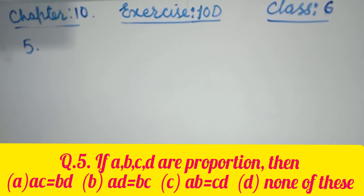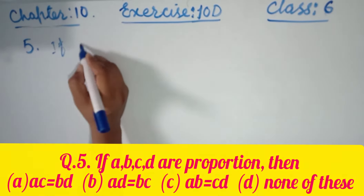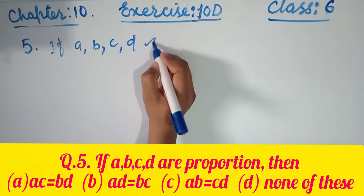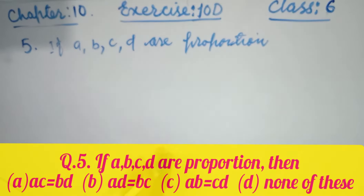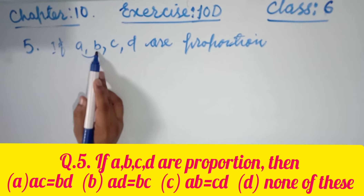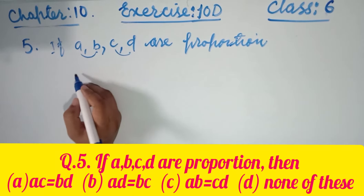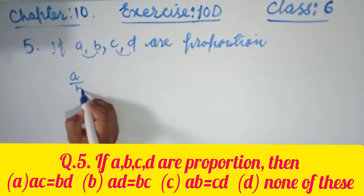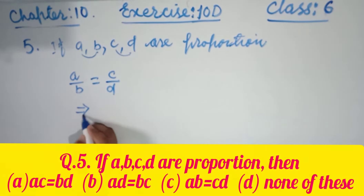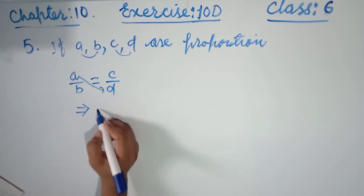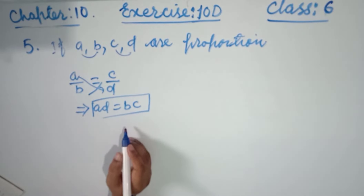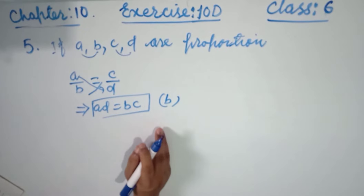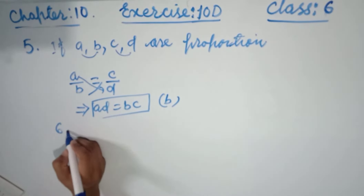Question number five says: if a, b, c, and d are in proportion, then what follows? Proportion means the ratio of the first two numbers equals the ratio of the last two, so a by b equals c by d. By cross multiplication, a into d equals b into c. So ad equals bc, which is the correct option.